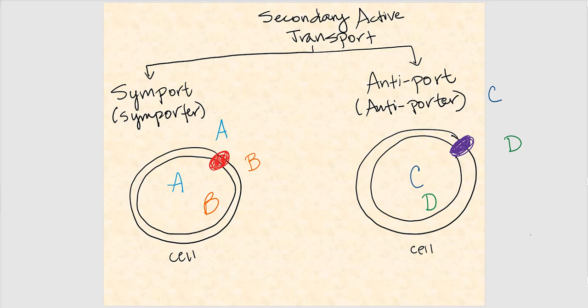Secondary active transport is basically the movement of at least two substances. We're going to move one substance following its concentration gradient, meaning from high to low, which is classic diffusion, and at the same time move another substance against its concentration gradient, meaning from low to high. So secondary active transport is a combination of both diffusion and active transport.